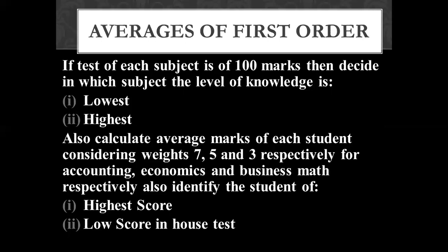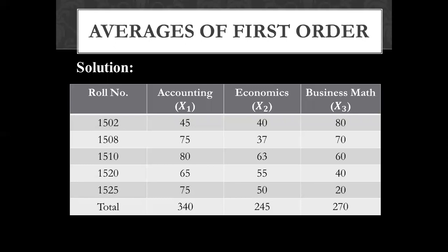We will start with question 3.8 and then 3.9. I have given the variable names: x1 for accounting, x2 for economics, x3 for business math. The total for accounting x1 is 3.9, which gives 3.4. Economics x2 gives 2.45. Business math x3 has a total of 2.7.